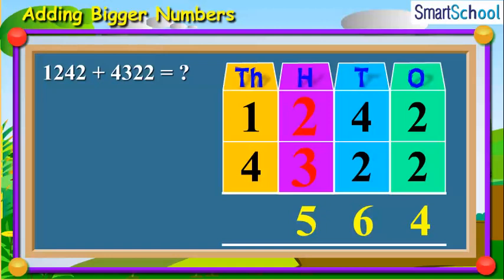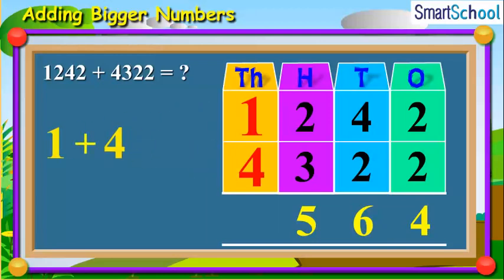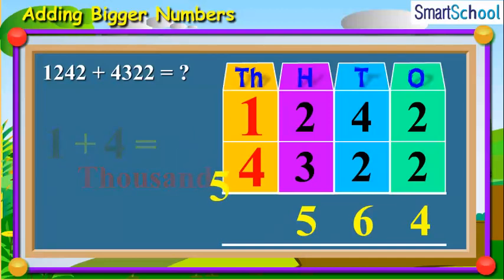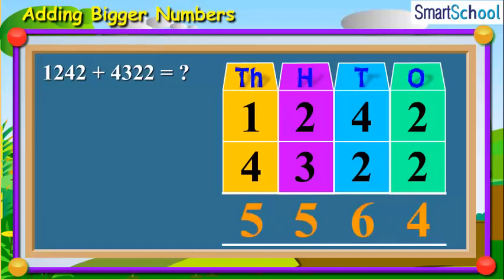Now, add the thousands digits together, which will be 1 plus 4 is equal to 5,000. Now, place 5 at the thousands place. So, our final answer will be 5,564.